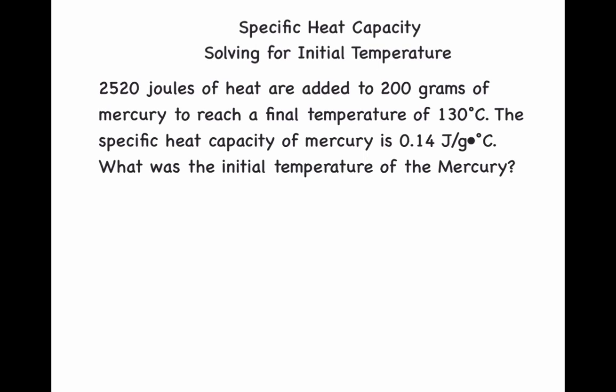Specific heat capacity, solving for initial temperature. 2,520 joules of heat are added to 200 grams of mercury to reach a final temperature of 130 degrees Celsius. The specific heat capacity of mercury is 0.14 joules per gram degree Celsius.